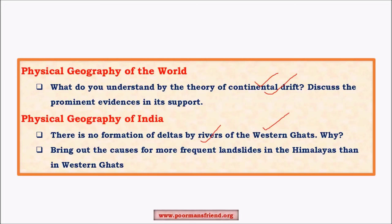The question 'Bring out the causes of more frequent landslides in Himalayas than in Western Ghats' relates to important geographical phenomena. Landslides, like earthquakes and volcanoes, are important geographical phenomena. The Himalayas are an eco-sensitive zone, very vulnerable to quick changes, and are earthquake-prone. Due to dense settlements in recent years, the situation has worsened, so you need to understand these questions from different angles.